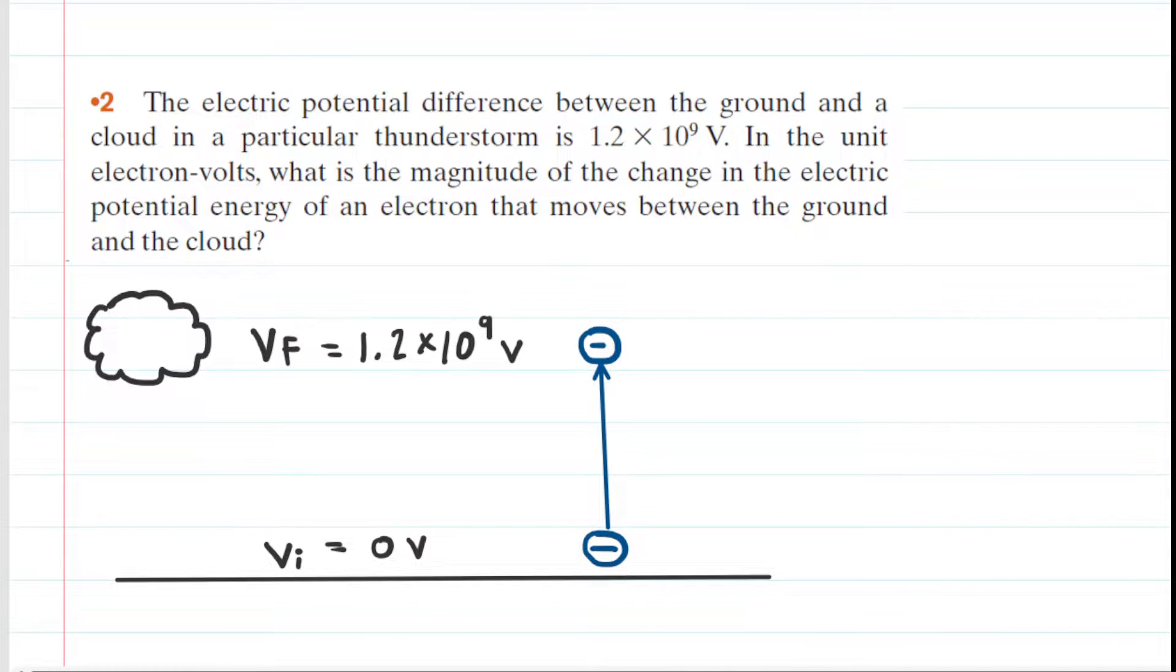Please go ahead and pause the video and reread the problem before listening on. We have to calculate the magnitude of the change in the electric potential energy of an electron that is moving between the ground and the cloud.